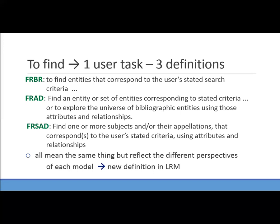Consider something really simple like the user task 'to find' — a seemingly uncontroversial user task. However, each model has a different definition. You can't just pick one; you have to look at all three definitions and figure out a new definition that captures the essence of all three. That's what I mean about everything having to be re-evaluated.